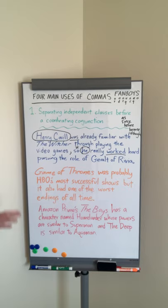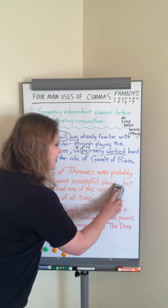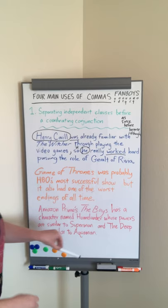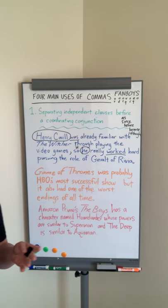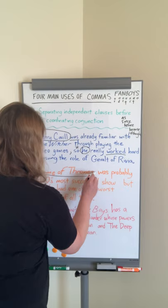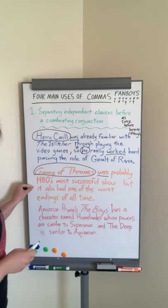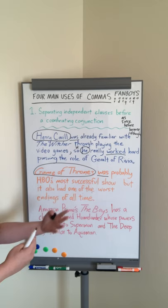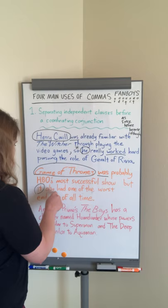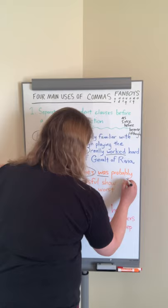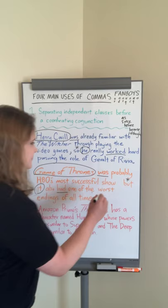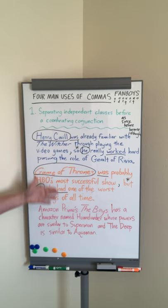Here's another one: 'Game of Thrones was probably HBO's most successful show, but it also had one of the worst endings of all time.' And this is just facts. 'Game of Thrones' is our first subject, 'was' is our predicate. And then even though this pronoun refers to Game of Thrones, because we've said 'but it,' it starts a new independent clause — a new subject. So 'it had.' Our coordinating conjunction here is 'but,' and we just need that comma before it to separate.